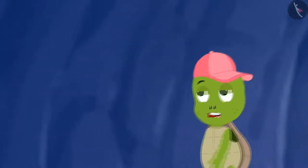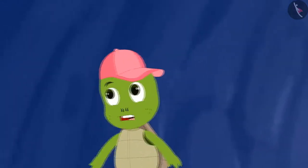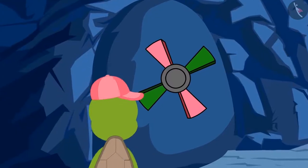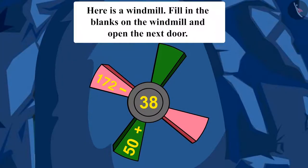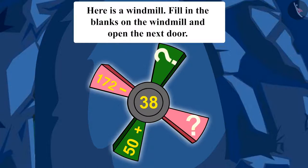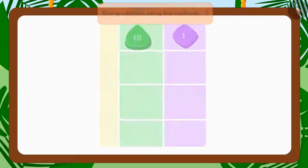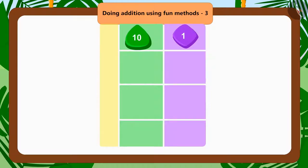Now, Tufan entered the cave and saw another door. Tufan found this puzzle at the second door. Here is a windmill. Fill in the blanks on the windmill and open the next door. Let us find the answer to this puzzle with Tufan. Children, what do we have to do here?